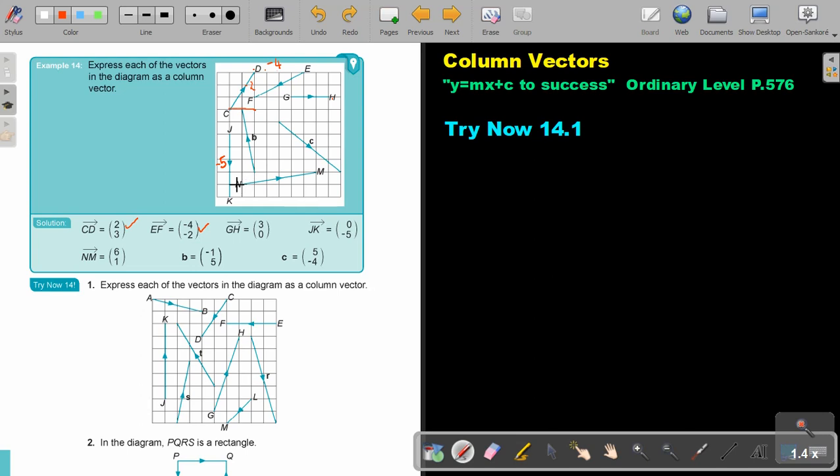And then NM, so it's 1, 2, 3, 4, 5, 6. Positive 6 and up 1, positive 1, 6 and 1.